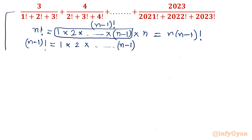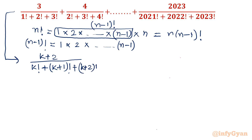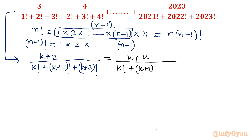So let's apply. First I will begin by considering the general term. I will write this as (k+2) divided by [k! + (k+1)! + (k+2)!]. Now I will apply the recursive formula in all three terms in the denominator. So (k+2)! = (k+2) × (k+1) × k!.